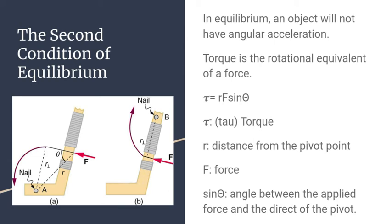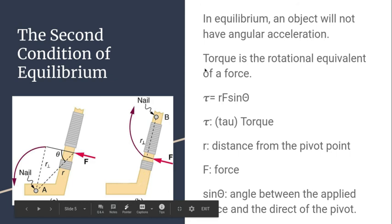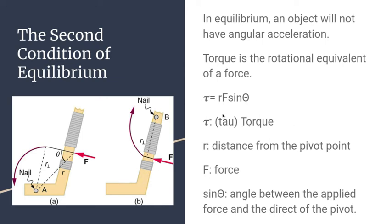So the second condition of equilibrium. In equilibrium, an object will not have angular acceleration, okay? So we've talked about linear acceleration this whole time with the F=ma equation. Now we have to talk about angular acceleration, which brings in a whole different talking point, which is torque, okay? So that's the rotational equivalent of force. That is really the best way that you can remember it. It is the rotational equivalent of force. So now, instead of just talking about force equals mass times acceleration, we're talking about torque equals mass times angular acceleration, okay? Here's your fancy little T, that is torque, okay? That's tau, which is just a representation of torque, because you can't use T because that's time period or time.